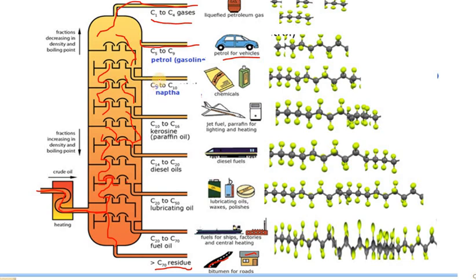Naphtha is obtained at around 120 to 180 degrees centigrade with 9 to 10 carbons and is used in the preparation of chemicals and the dry cleaning industry. Kerosene is obtained around 180 to 250 degrees centigrade with carbons ranging from C10 to C16 and is used as a domestic fuel as well as jet engine fuel.